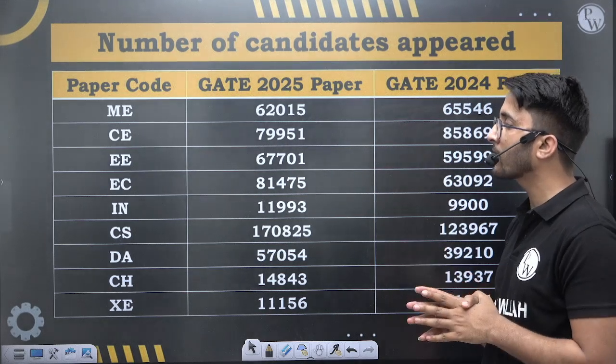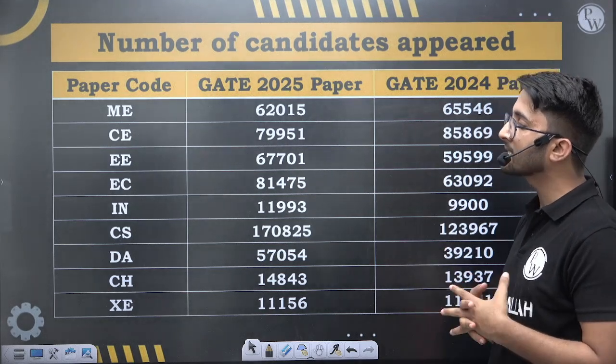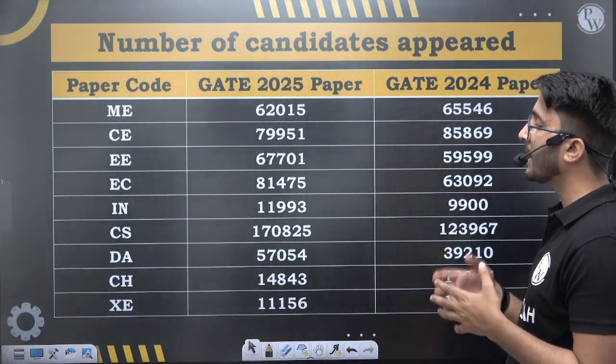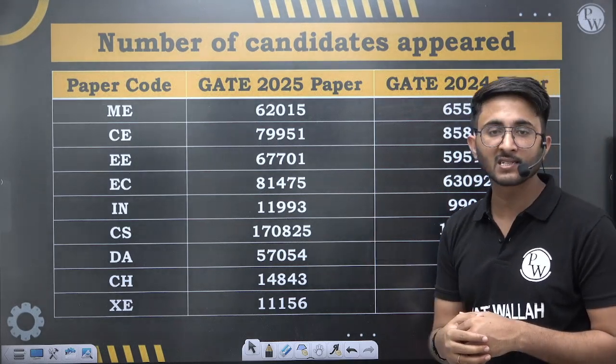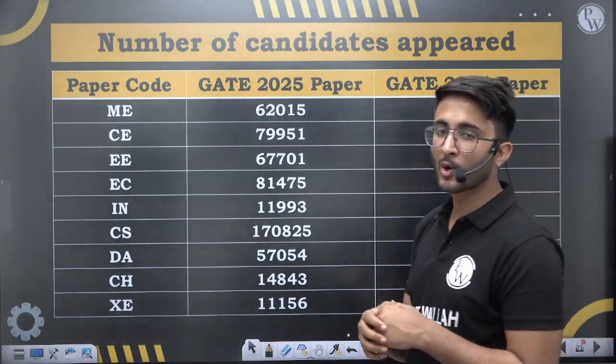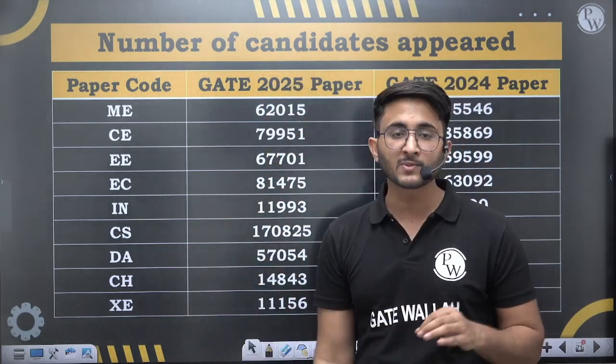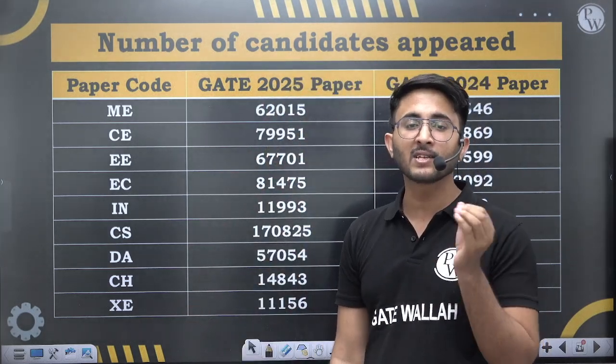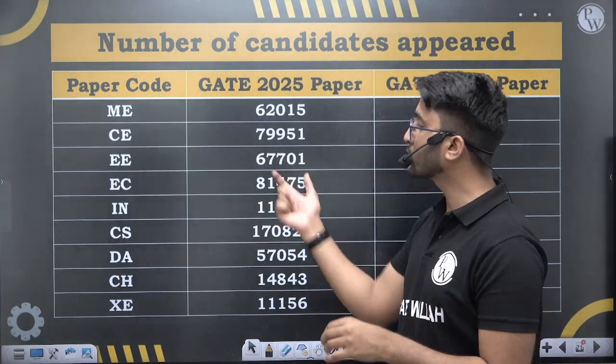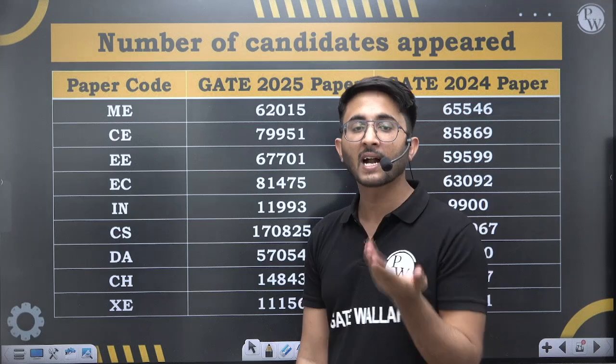You can observe that in branches like Electrical, ECE, CS, and DA there are big changes in the total number of students appeared. This data was collected through individual student scorecards, where the number of students appeared is mentioned. The official data will be released by IIT Roorkee soon, including total registrations, total qualified students, and other details.